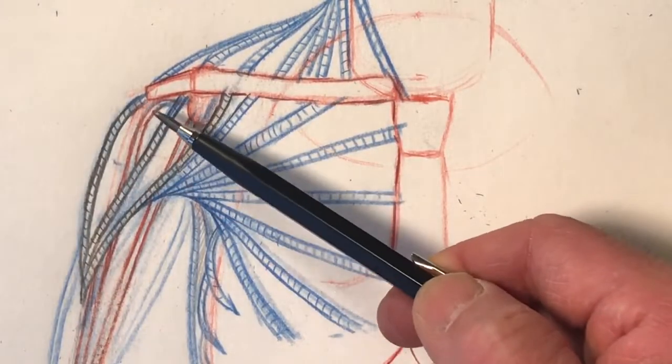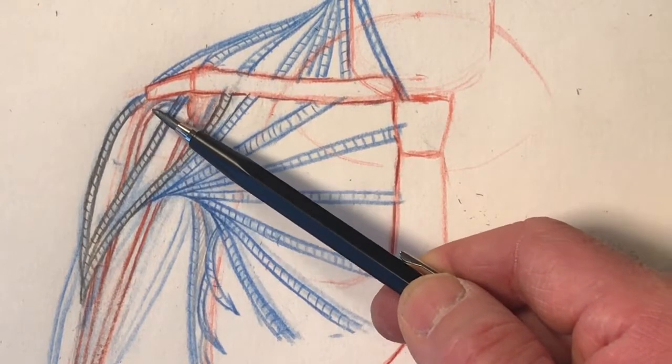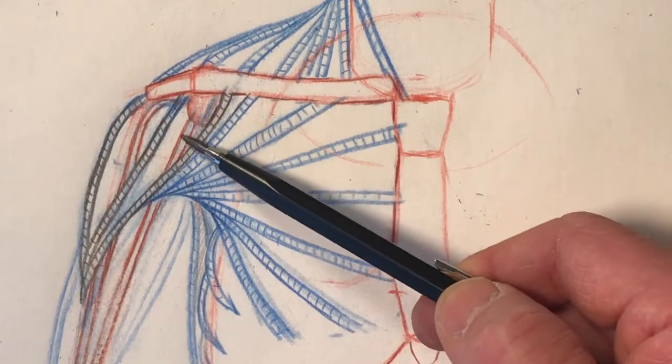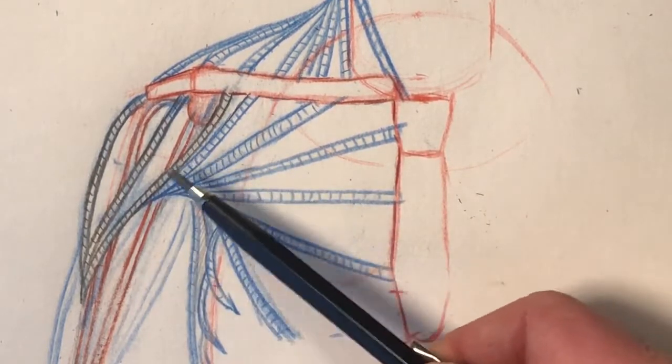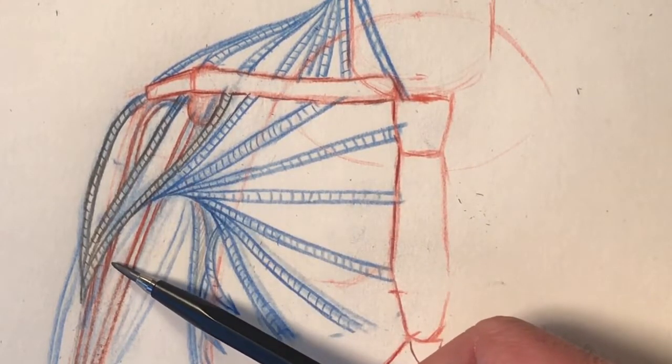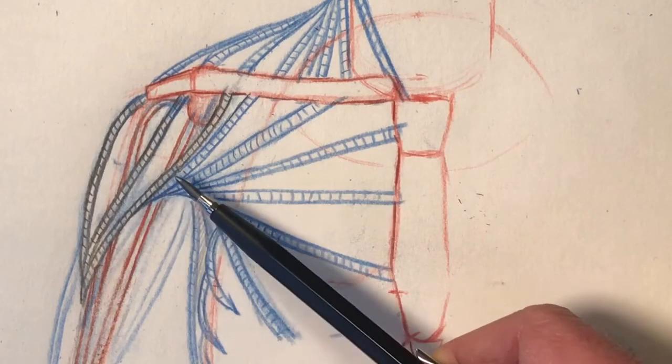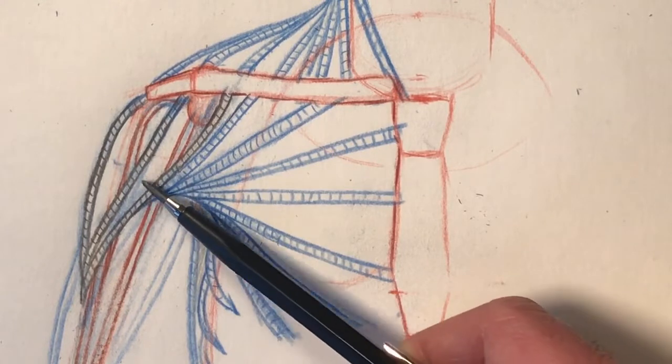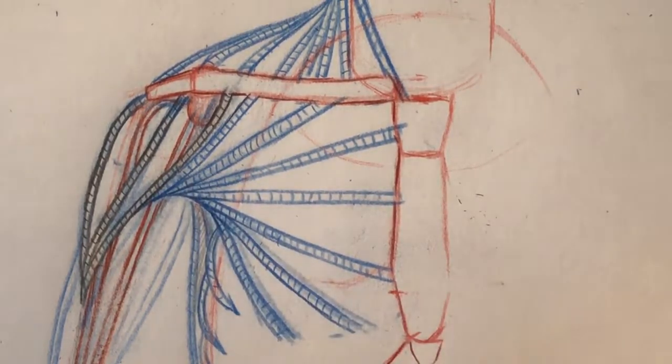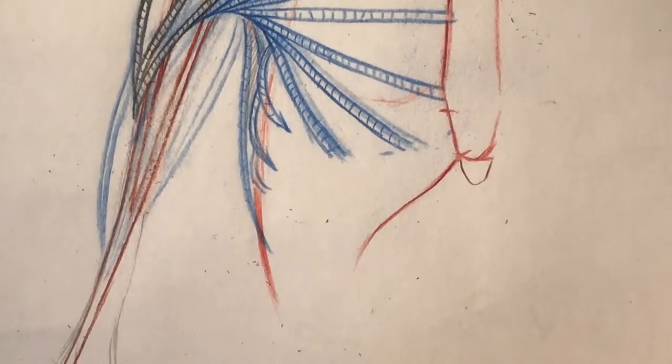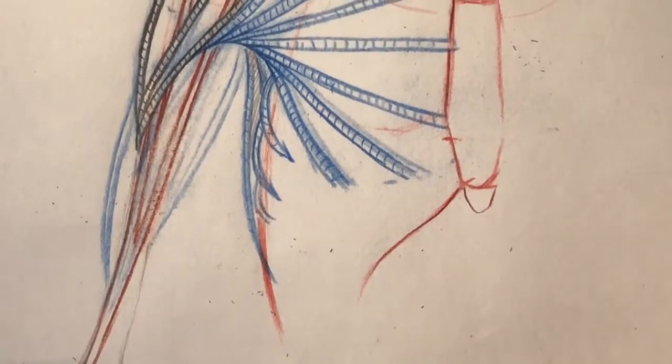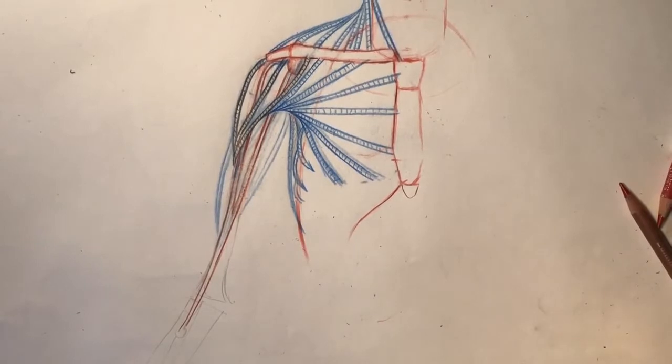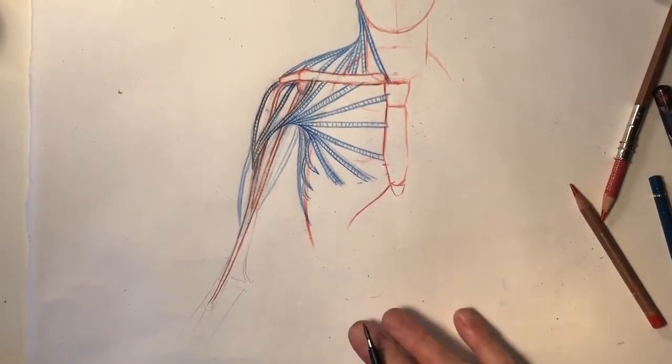So now here I have under the deltoid the long head of the bicep and the short head of the bicep. Now you see how the deltoid is over the pectoralis, and the pectoralis is over the bicep. So one, two, three.